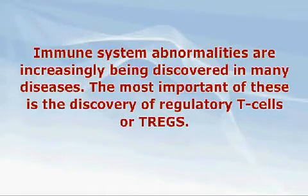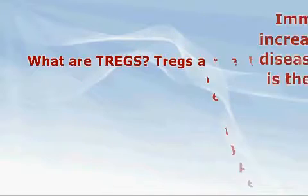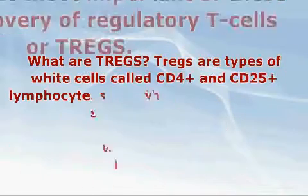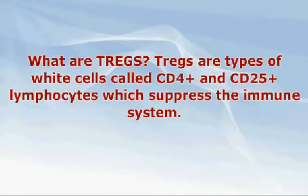That is, until now. Immune system abnormalities are increasingly being discovered in many diseases. The most important of these is the discovery of regulatory T-cells, or TREGS. TREGS are types of white cells called lymphocytes which suppress the immune system, and they control the activity of the immune system.